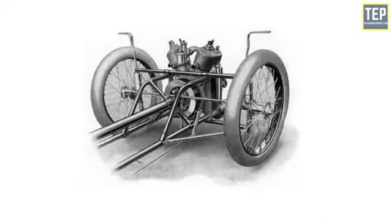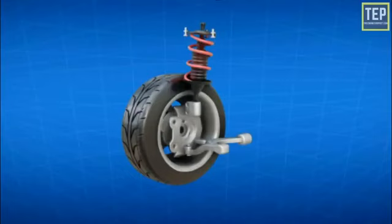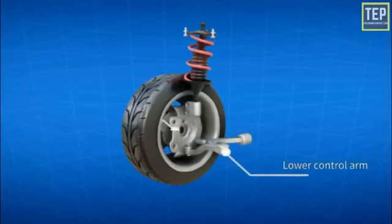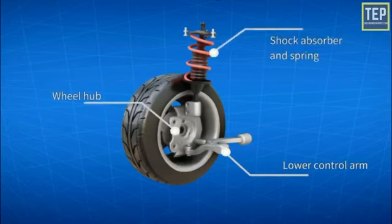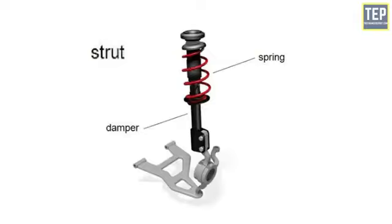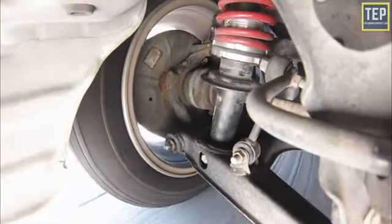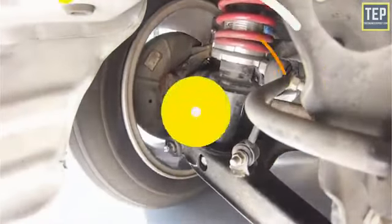The MacPherson strut assembly was developed by Earl S. MacPherson, an engineer with Ford USA, as a single wishbone with a telescopic strut type system in 1947. In this system, a lower control arm is located on the lower side of the wheel hub, and on the upper end a shock absorber or strut is attached with a flexible joint. Both the strut and lower control arm are connected to the vehicle frame. The main component is the strut, consisting of a spring and damper. When the vehicle encounters road irregularities, the wheel moves up and down and the shock is transferred to the strut, which absorbs the maximum force. It has a relatively simple and compact design that is inexpensive.